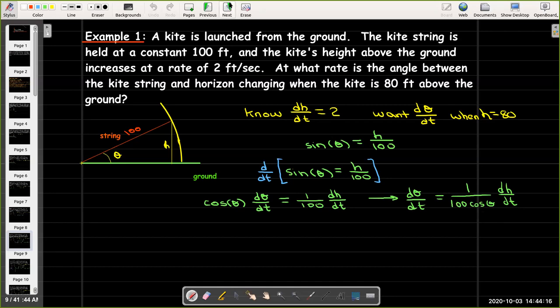Well, how can I find that without knowing theta? Well, I'm going to go back to my triangle and use my trig ratios. If I call the distance from where the kite is anchored to the point on the ground directly below the kite, I'm going to call that distance x. Then I have a right triangle and I can find this value of x for any given value of h using the Pythagorean theorem.